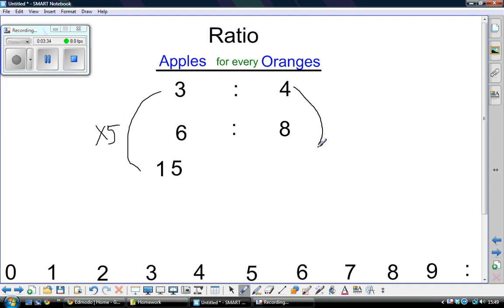What does that mean we have to do to the four? That's right, we have to multiply it by five. We could say fifteen apples for every... Four times five is twenty. Twenty oranges.